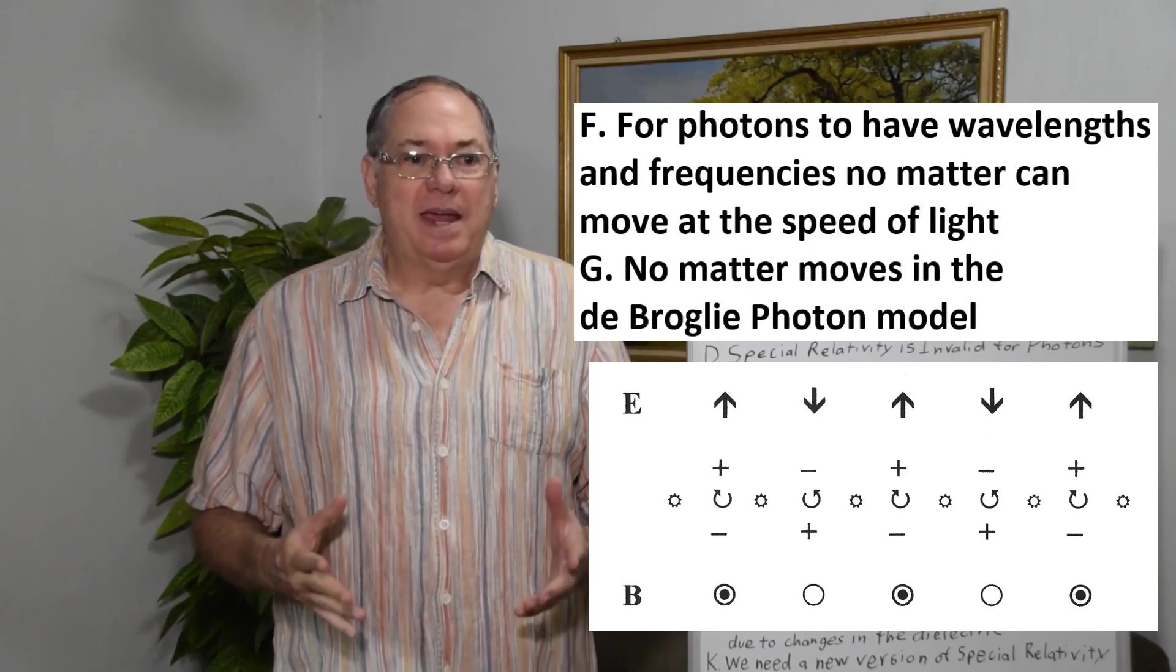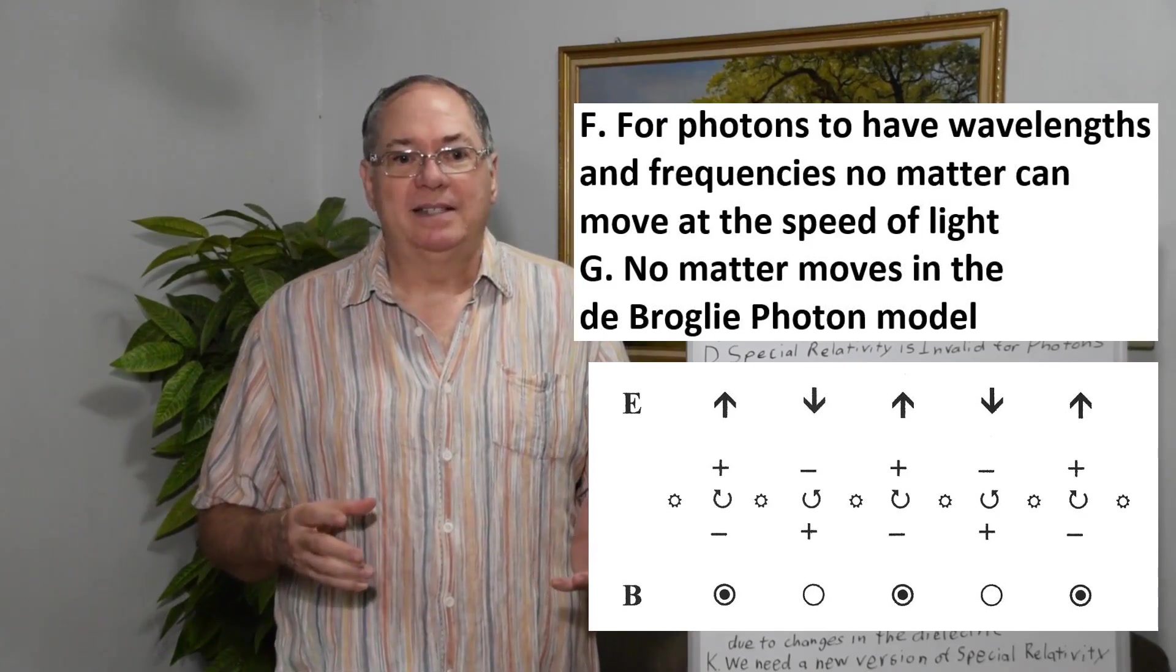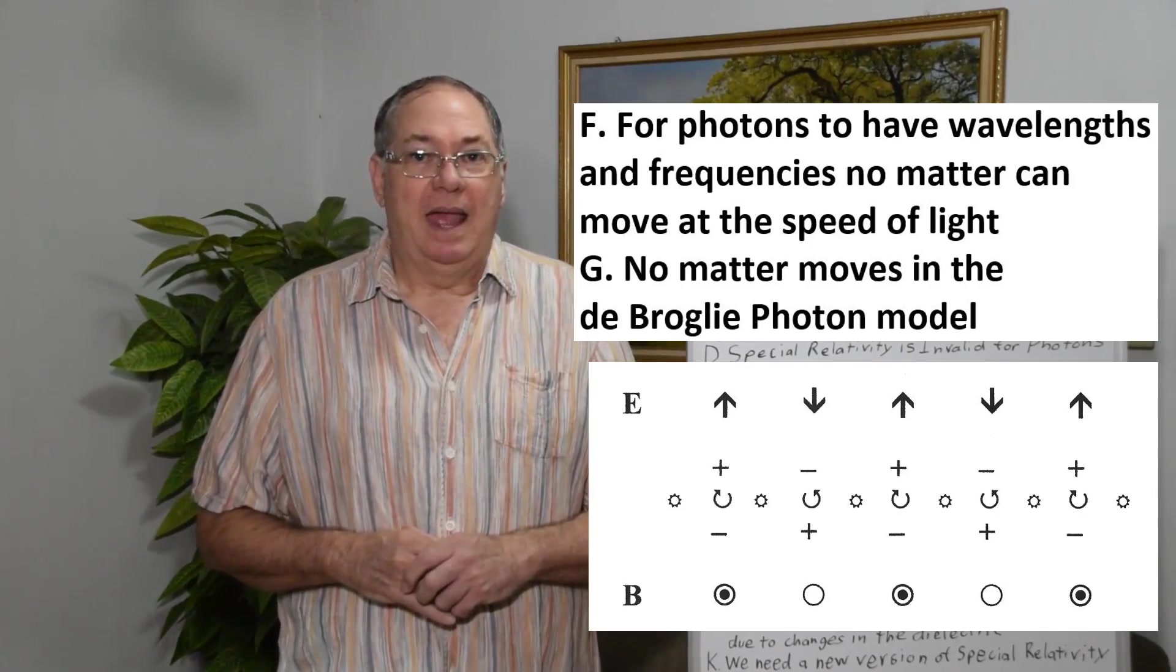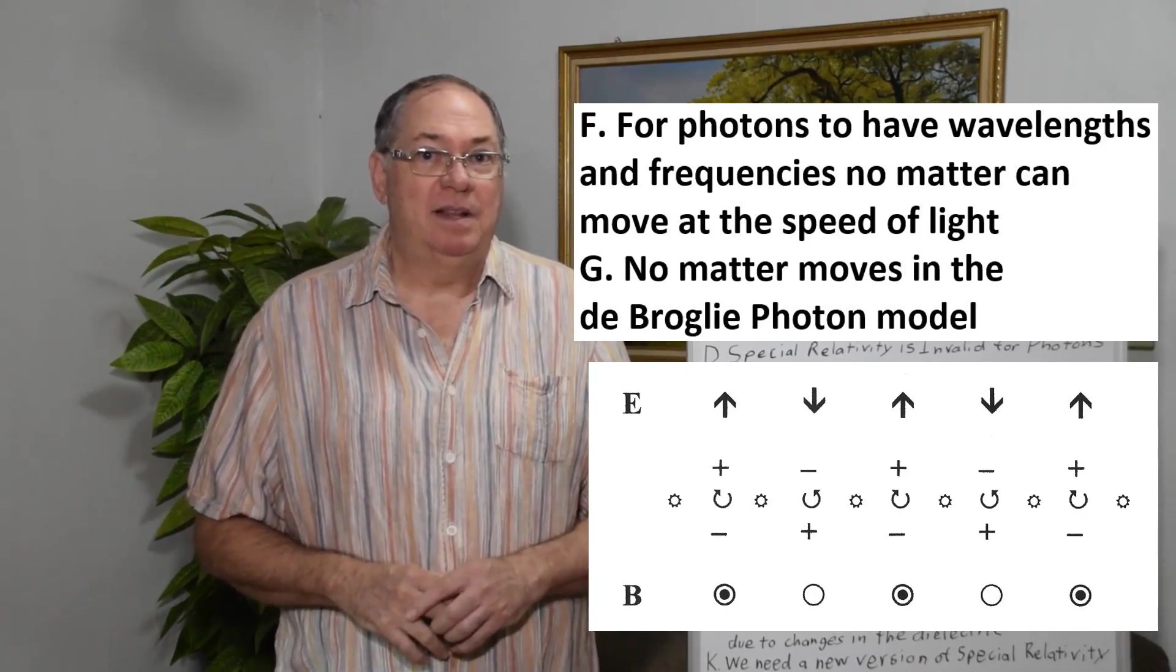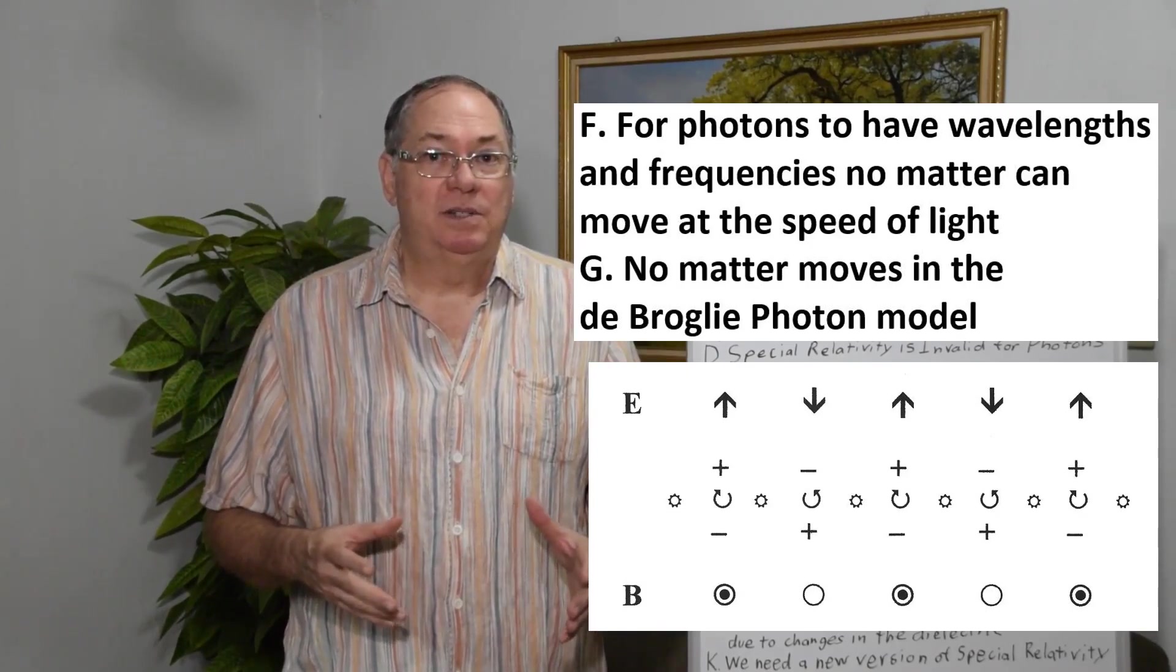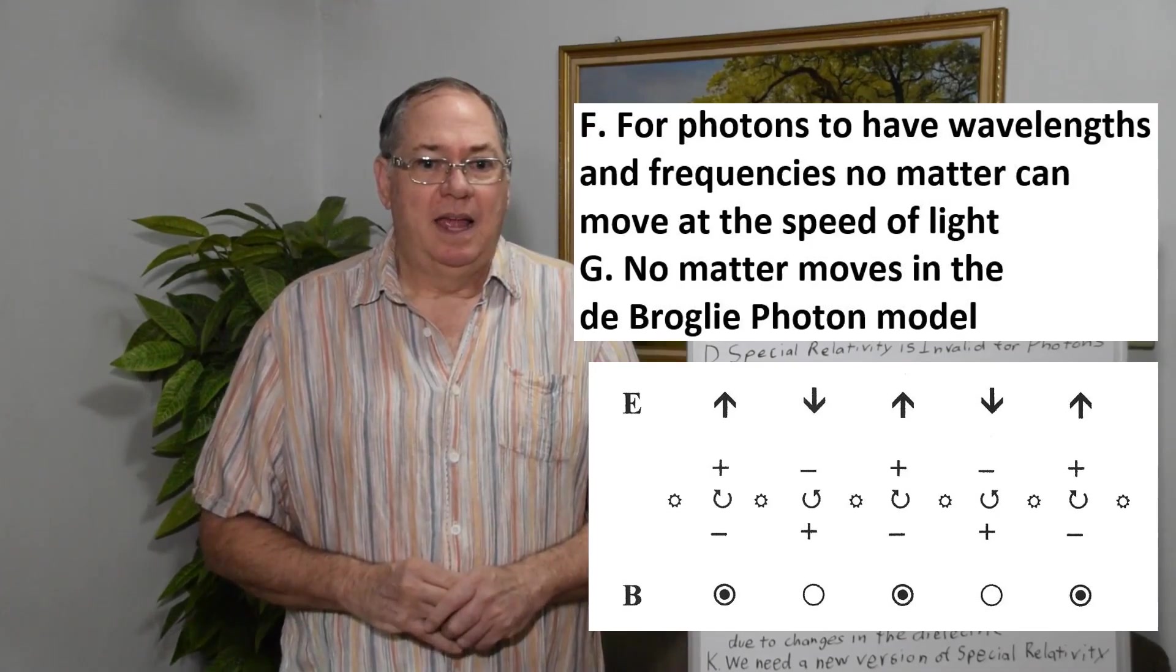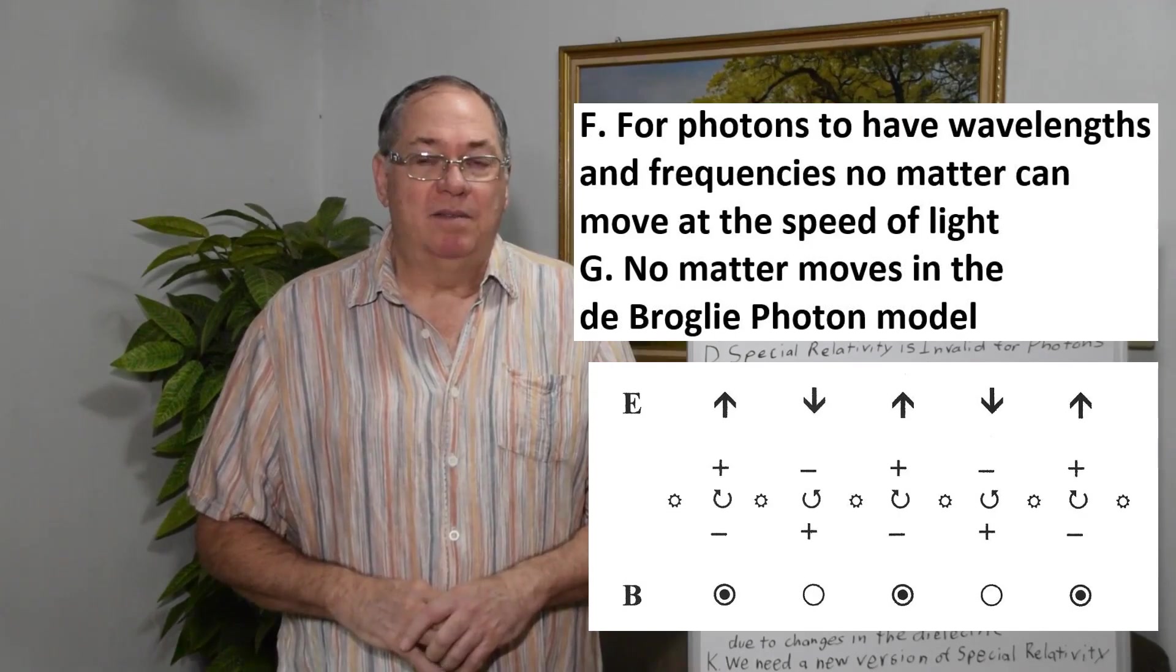So in order to make relativity work, we have to go back to realizing that photons must have wavelengths and frequencies. And so they can't have any matter moving at the speed of light. You need to have a model for a photon in which basically nothing moves or moves so slow that it's classical.